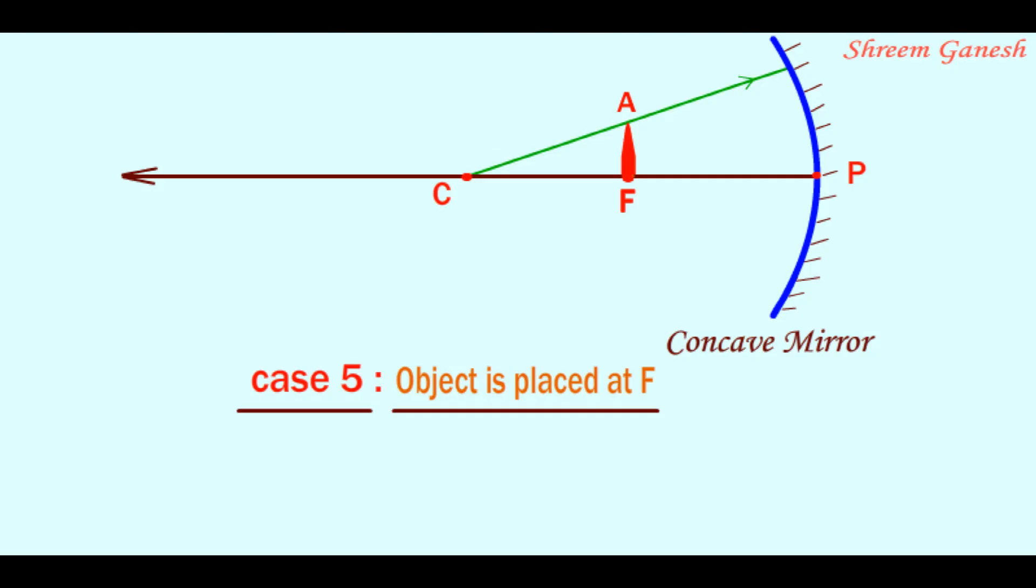Since this incident ray is passing through the center of curvature, it will bounce back after reflection following the same path. The second incident ray is touching the mirror at its pole and it will reflect following the laws of reflection.